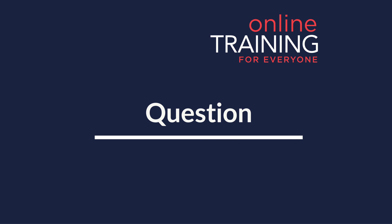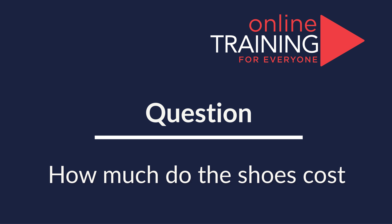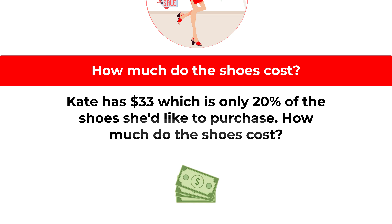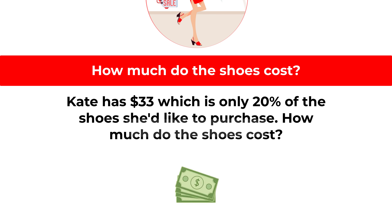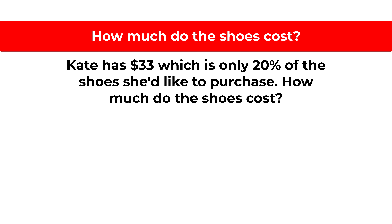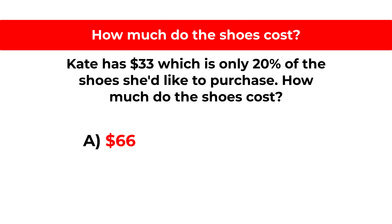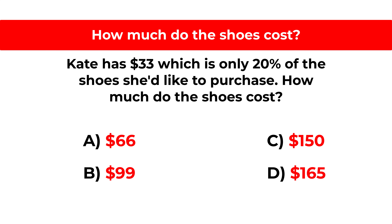Here's the cool question that you frequently get in the test. Kate has $33, which is only 20% of the cost of shoes that she would like to purchase. How much do the shoes cost? You're presented with four different choices: Choice A, $66. Choice B, $99. Choice C, $150. And Choice D, $165.